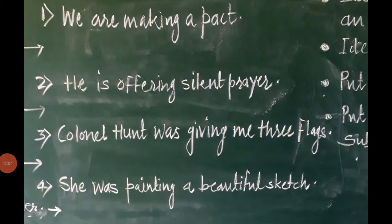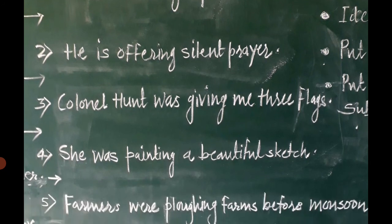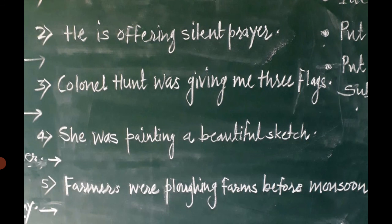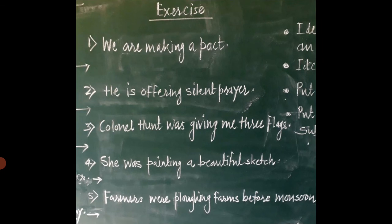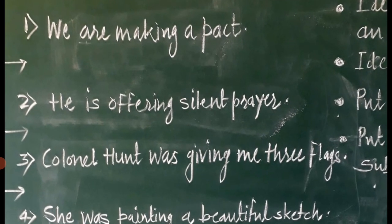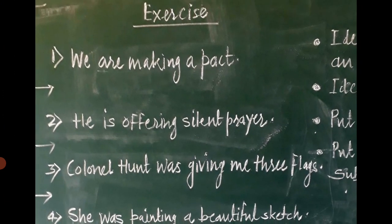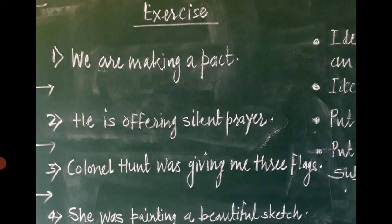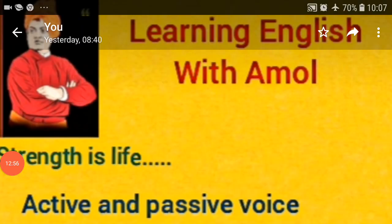Here are some examples for you to solve: We are making a pact. He is offering silent prayer. Colonel Hunt was giving me three flags. She was painting a beautiful sketch. And last one: Farmers were blowing farms before monsoon. This is an exercise for you all. Please try to solve these five questions, and try to pick out some more from your text and from the non-textual part also. If you like this video, please like it, share it with your friends and relatives, and do not forget to subscribe to my channel Learning English with Amol. Thank you dear students.